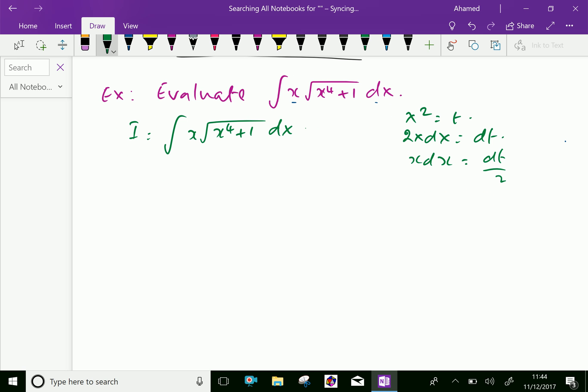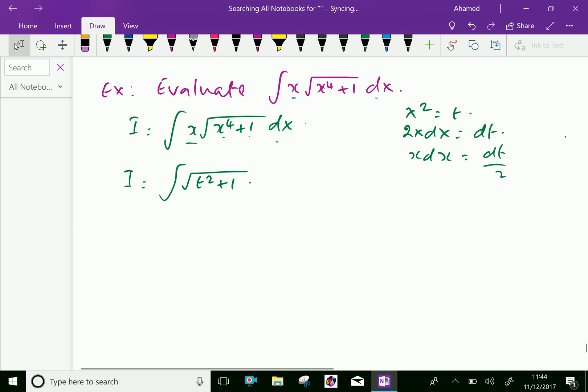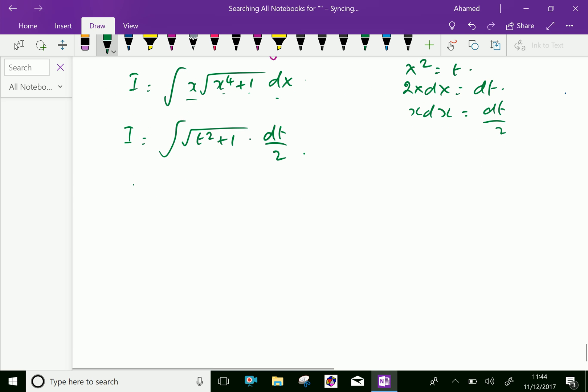Now apply the values here. I equals... instead of square root of x to the power 4 plus 1, we can write square root of t squared plus 1, and x dx we can write as dt over 2, which is further equal...